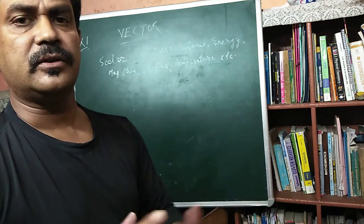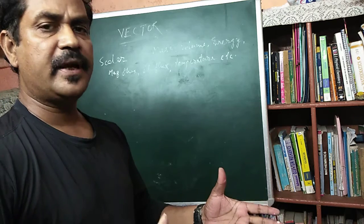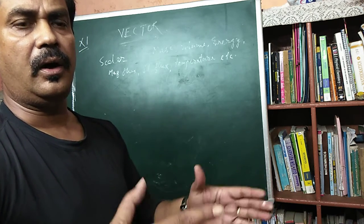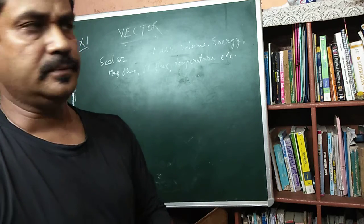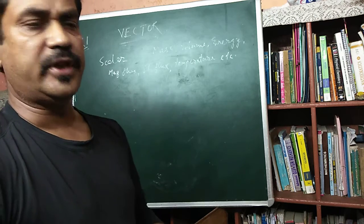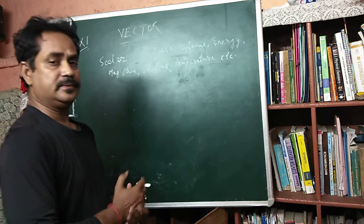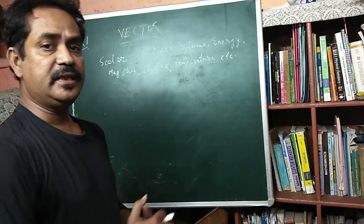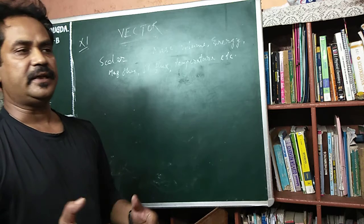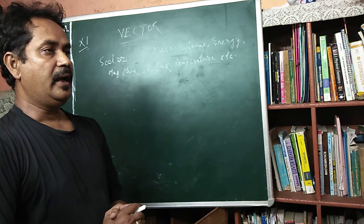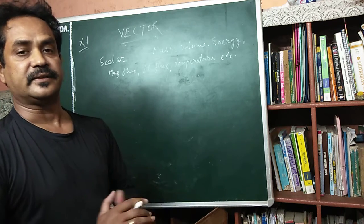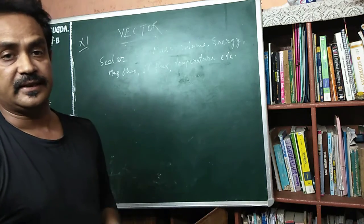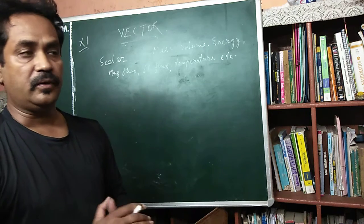If you take scalar quantities somewhere, their measurement does not change. For example, if you carry a 5 kg fruit from Dugda to Bokaro, it will remain 5 kg — it is not going to change. But there are some quantities when you change their position or direction, those physical quantities show exactly different results. Those physical quantities where direction is specified and direction is needed are called vector quantities.